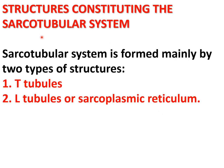The sarcotubular system is formed mainly by two types of structures: T-tubules, and L-tubules, which are also known as the sarcoplasmic reticulum.